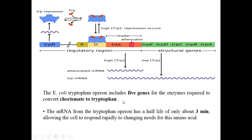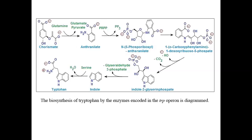The E. coli tryptophan operon includes five genes encoding the enzymes required for the conversion of chorismate to tryptophan. The mRNA from the tryptophan operon has a half-life of only about three minutes, meaning within these three minutes the mRNA must be translated into the respective enzymes for the conversion of chorismate into tryptophan. This is the biosynthetic pathway of tryptophan, showing the intermediate steps and the enzymes required at each stage.